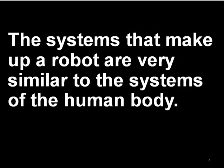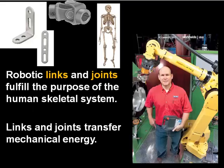You can understand why these four topics are the four fundamental robotics topics by making an analogy between them and the systems of the human body. In robotics, the study of kinematics is the area that roughly corresponds to the human skeletal system. Kinematics is the area of study in robotics that is concerned with the links and the joints of the robot. The links and joints in the robot are the parts that transfer mechanical energy.